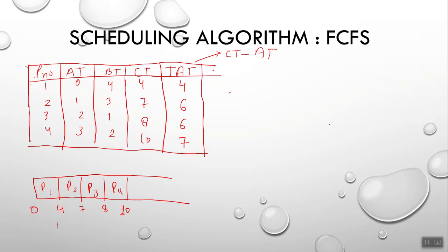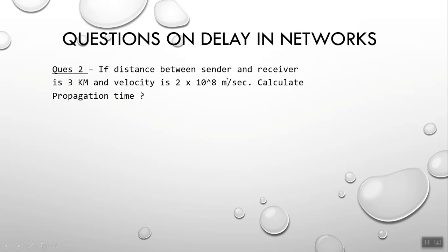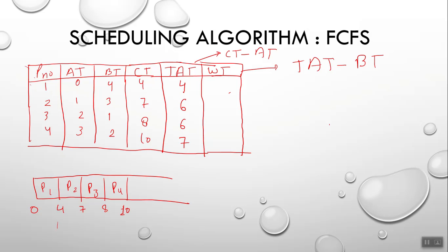Next, we calculate the waiting time. Waiting time equals turnaround time minus burst time. So: P1 = 4 − 4 = 0, P2 = 6 − 3 = 3, P3 = 6 − 1 = 5, and P4 = 7 − 2 = 5.